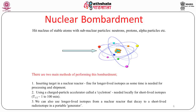During fission, some kind of product is formed which is having high mass number. The second way of production is using a charged particle accelerator called a cyclotron. So we have reactor-based and accelerator-based production. We can also have longer-lived isotopes from a nuclear reactor that decay to a short-lived isotope in a portable generator. So there are three important mechanisms: nuclear bombardment in a reactor, a charged particle accelerator, or a generator method.